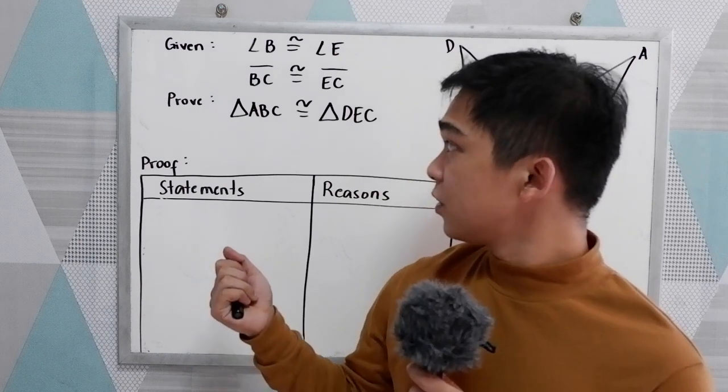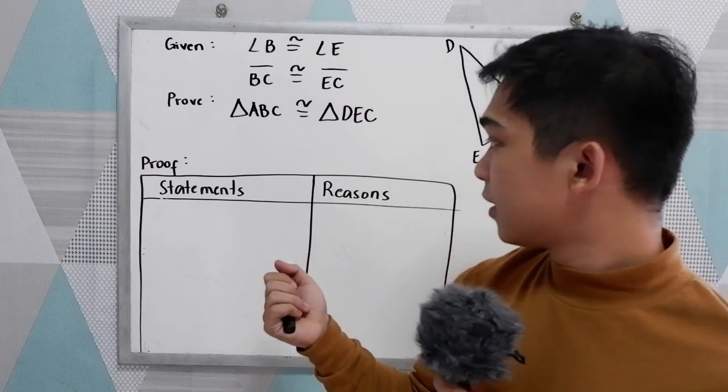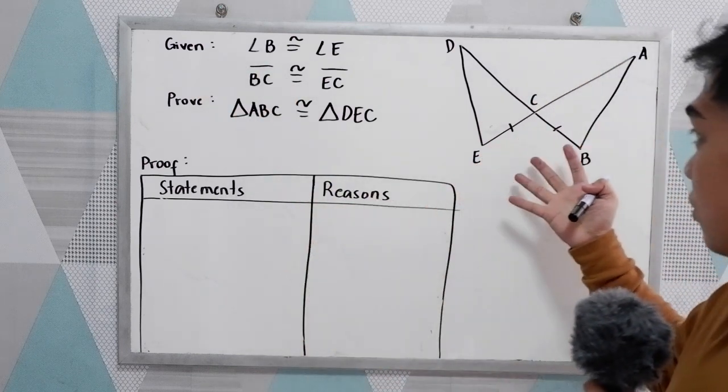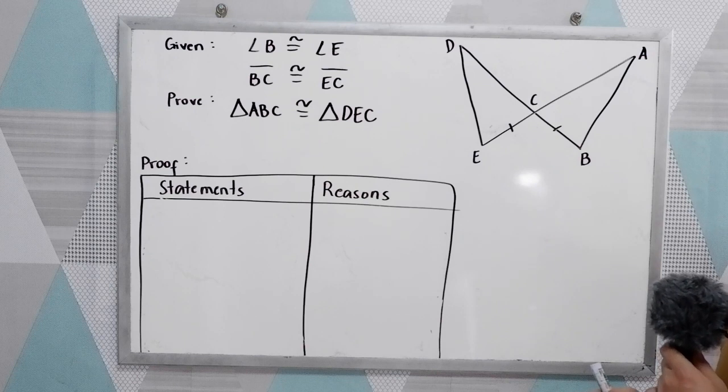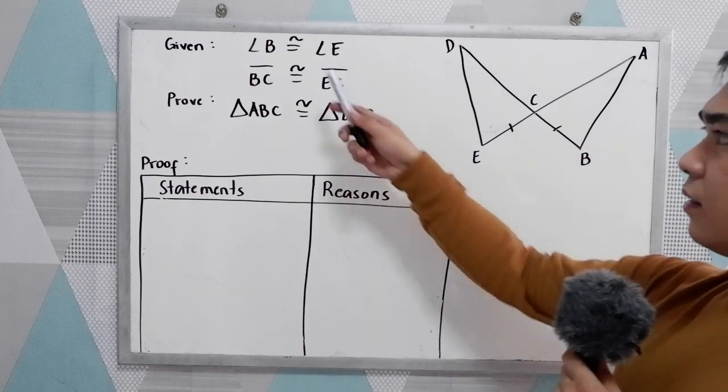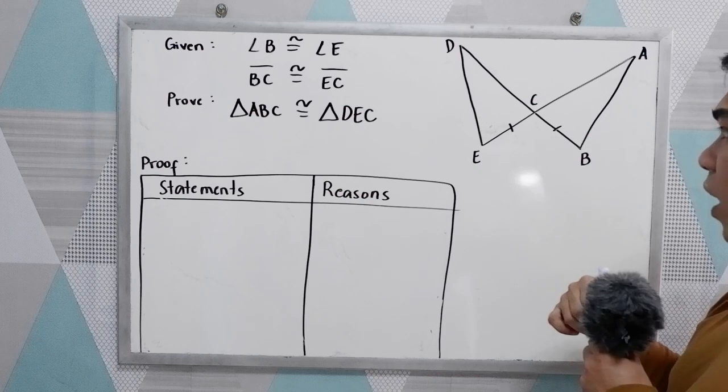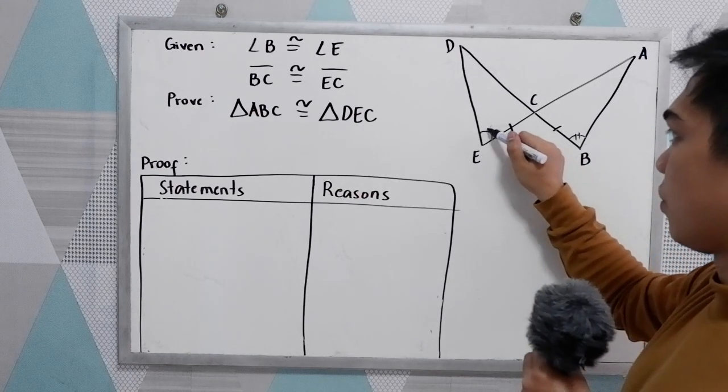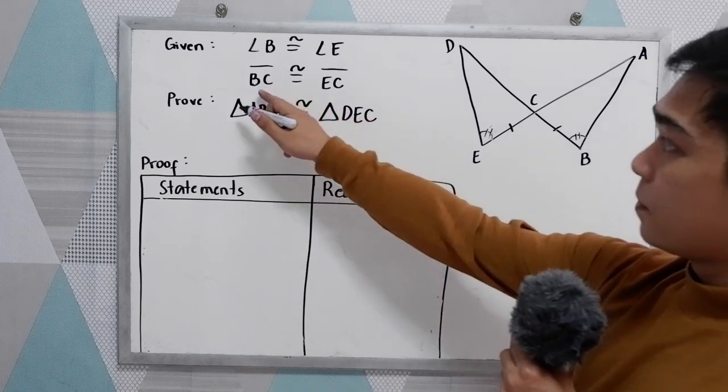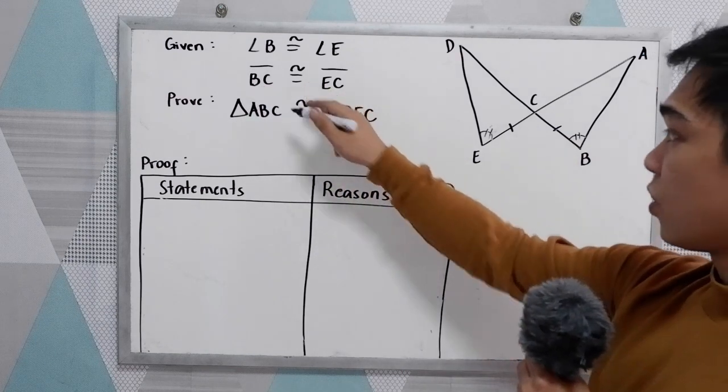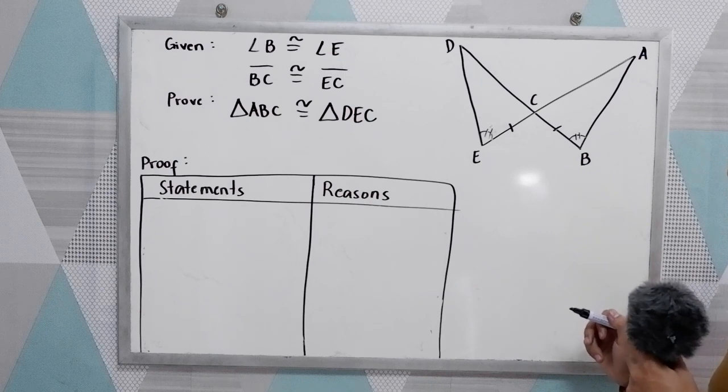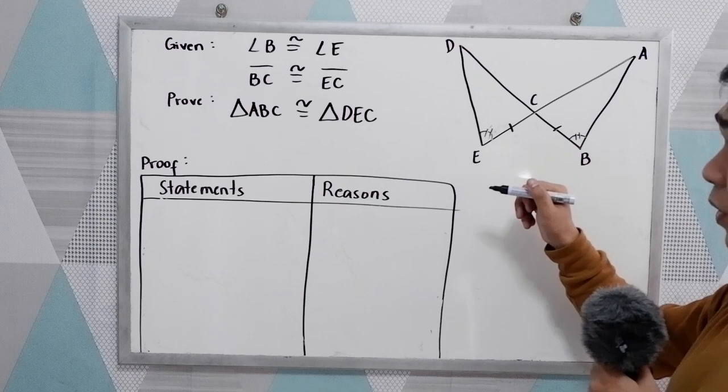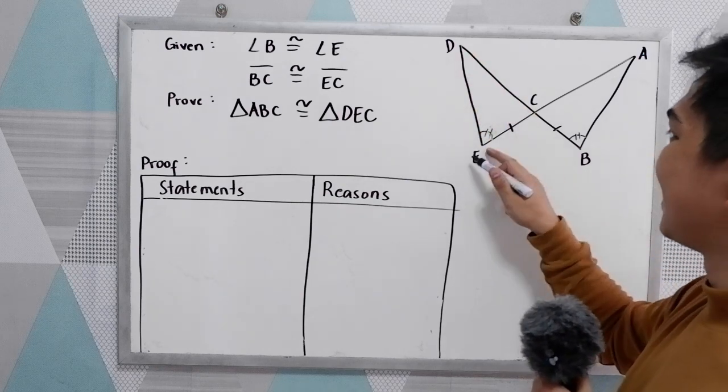Now let us try to prove the two-column proof using the given and our illustration here. Given: angle B is congruent to angle E, and BC is congruent to EC. We are going to prove that triangle ABC is congruent to triangle DEC.